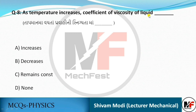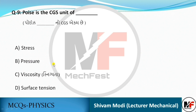As temperature increases, the coefficient of viscosity of a liquid decreases. Poise is the CGS unit of viscosity (sniktata).